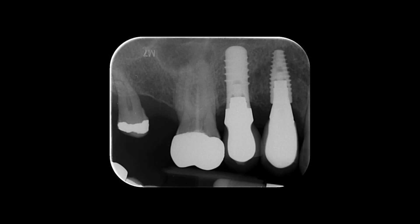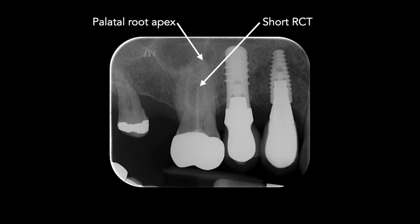Well, the obturating material in the palatal canal is short of the radiographic terminus. This could be because the canal is sclerosed apically, or perhaps there's an acute apical curvature, but either way it's not going to be difficult to remove that gutta-percha using a Gates-Glidden bur. The radiographic terminus, as you can see, is well beyond the obturating material.